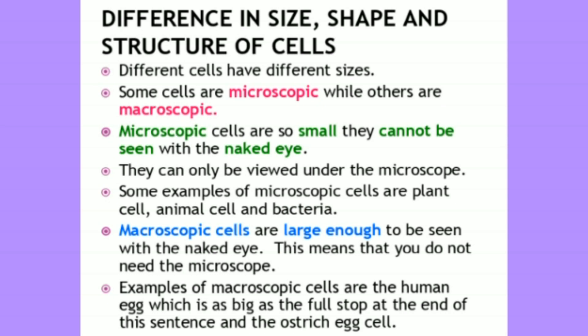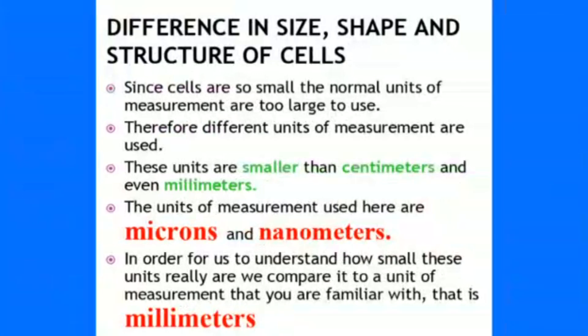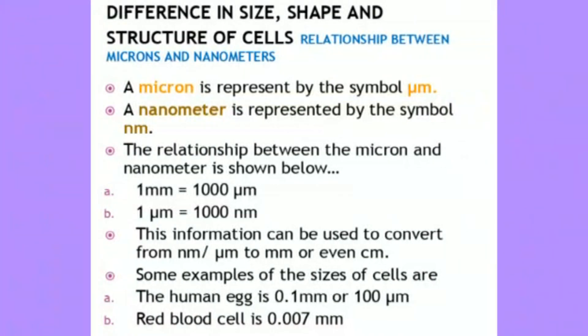Among these, the ostrich egg is the biggest cell. Since cells are so small, the normal units used are micrometre and nanometre. A micrometre is represented by the symbol μm. A nanometre is represented by the symbol nm. One millimetre is equal to 1000 micrometres (microns), and one micron is equal to 1000 nanometres.